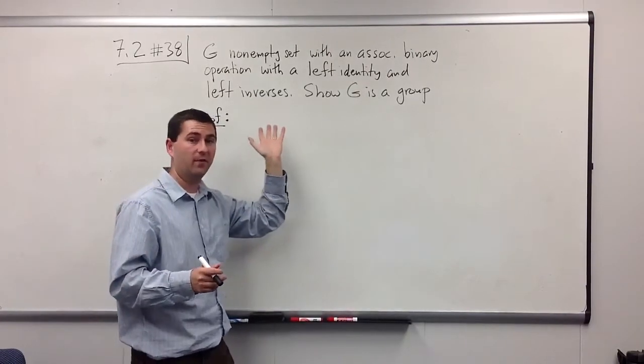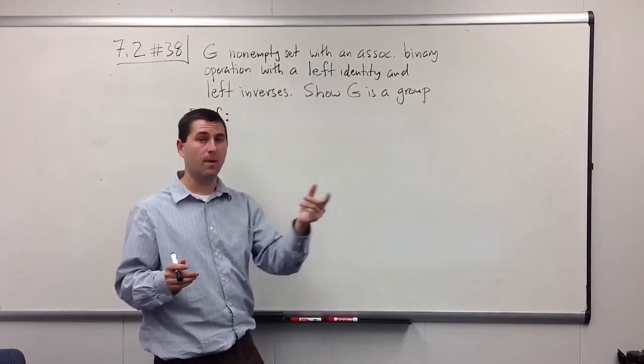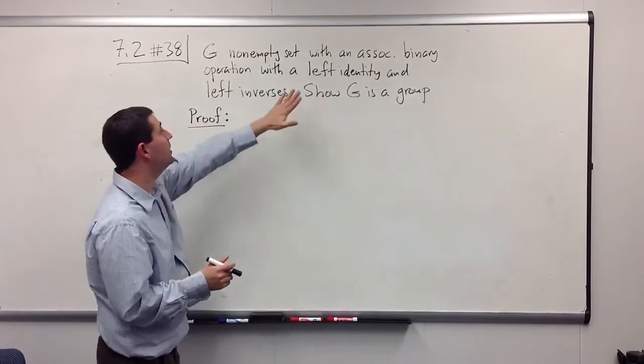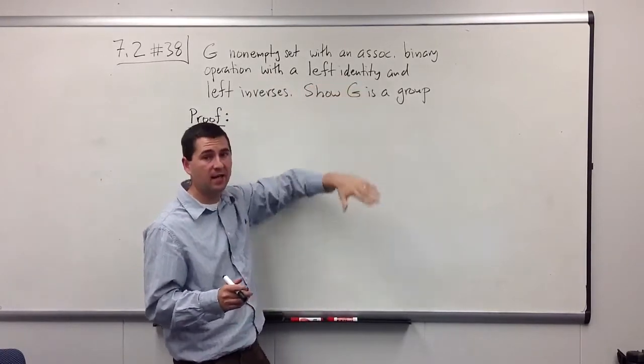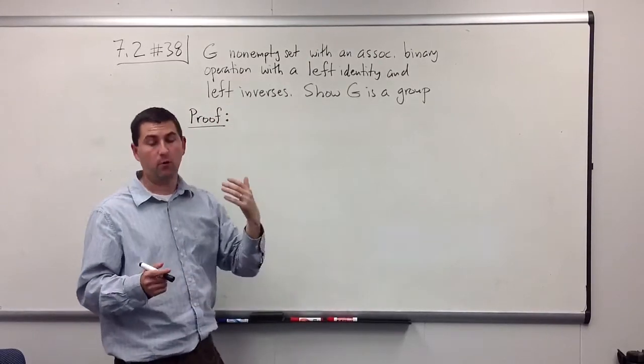And the same thing with left inverses. They should also be right inverses. They should take you back to the identity no matter where you put them, versus their inverse element. So we need to show those two things. That our left identity is also a right identity, and that our left inverse is also a right inverse.